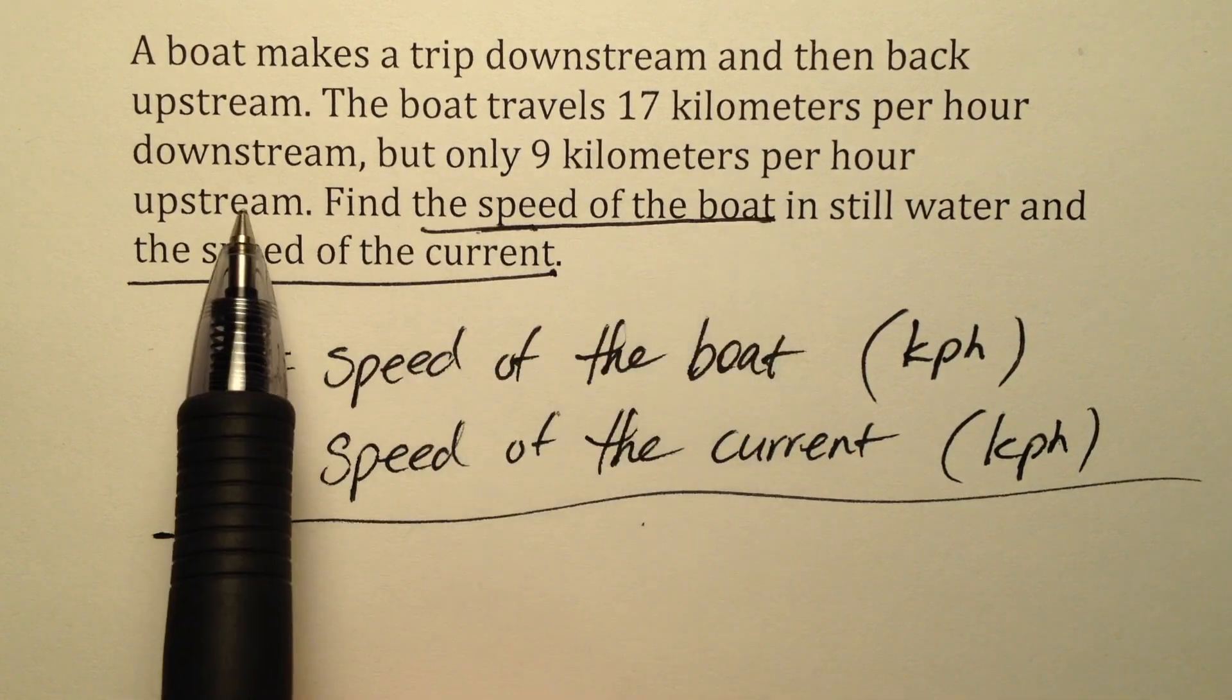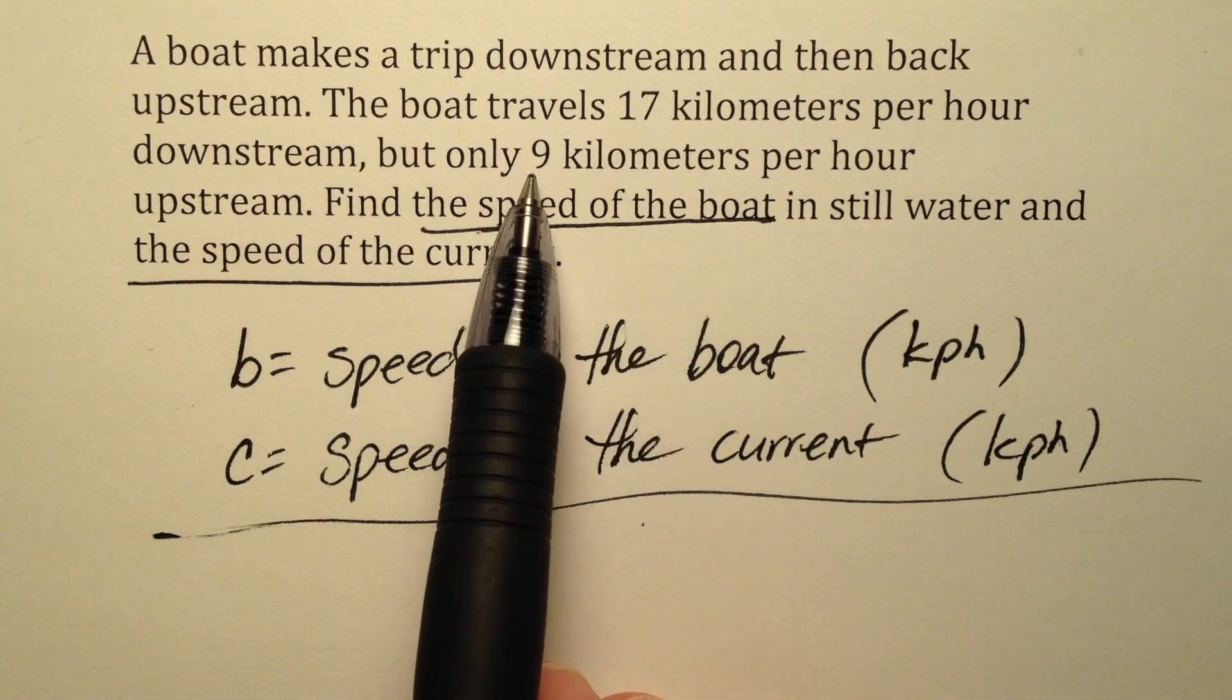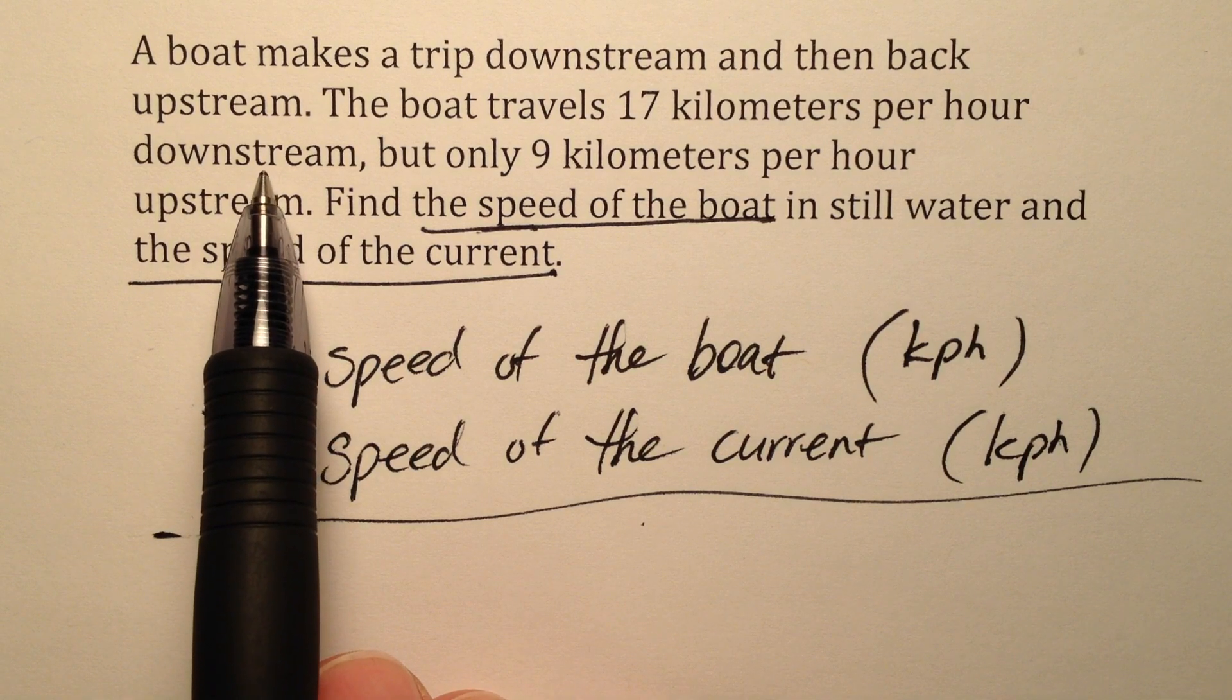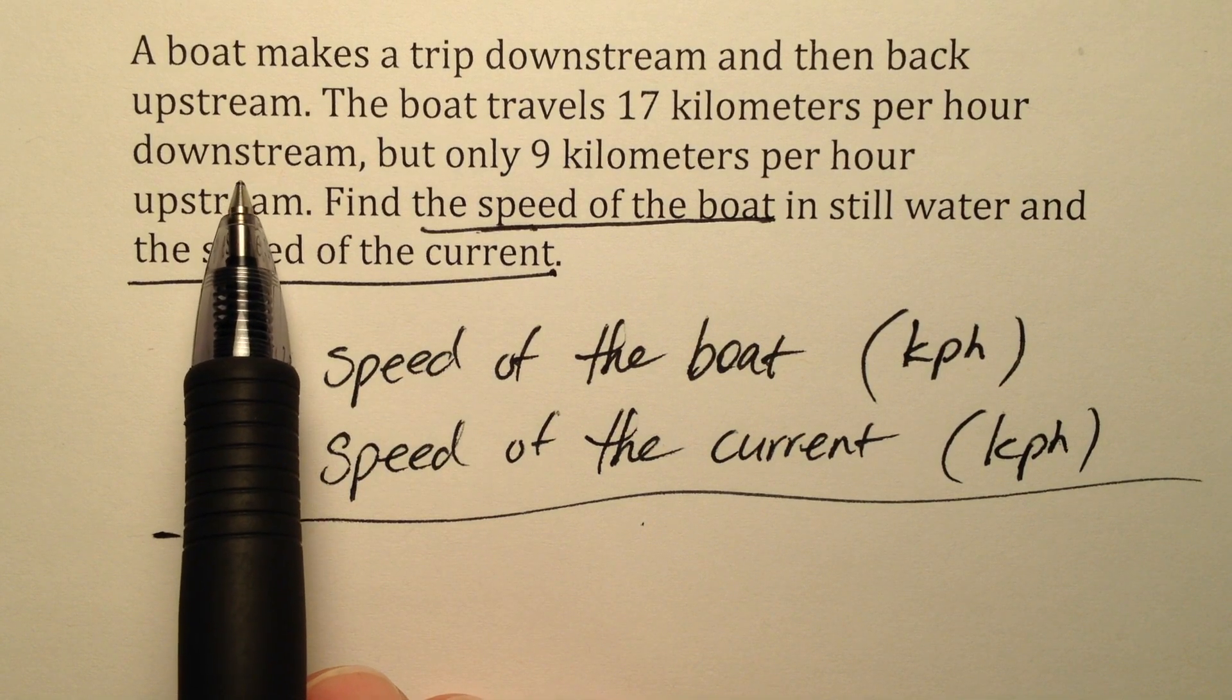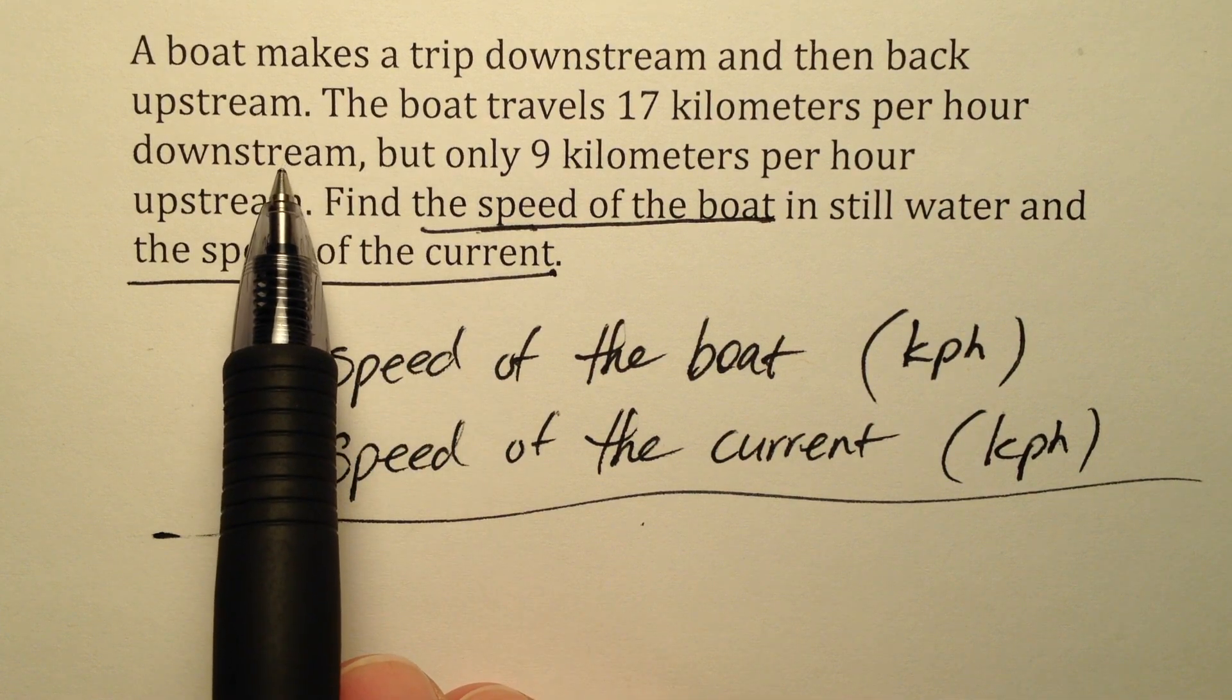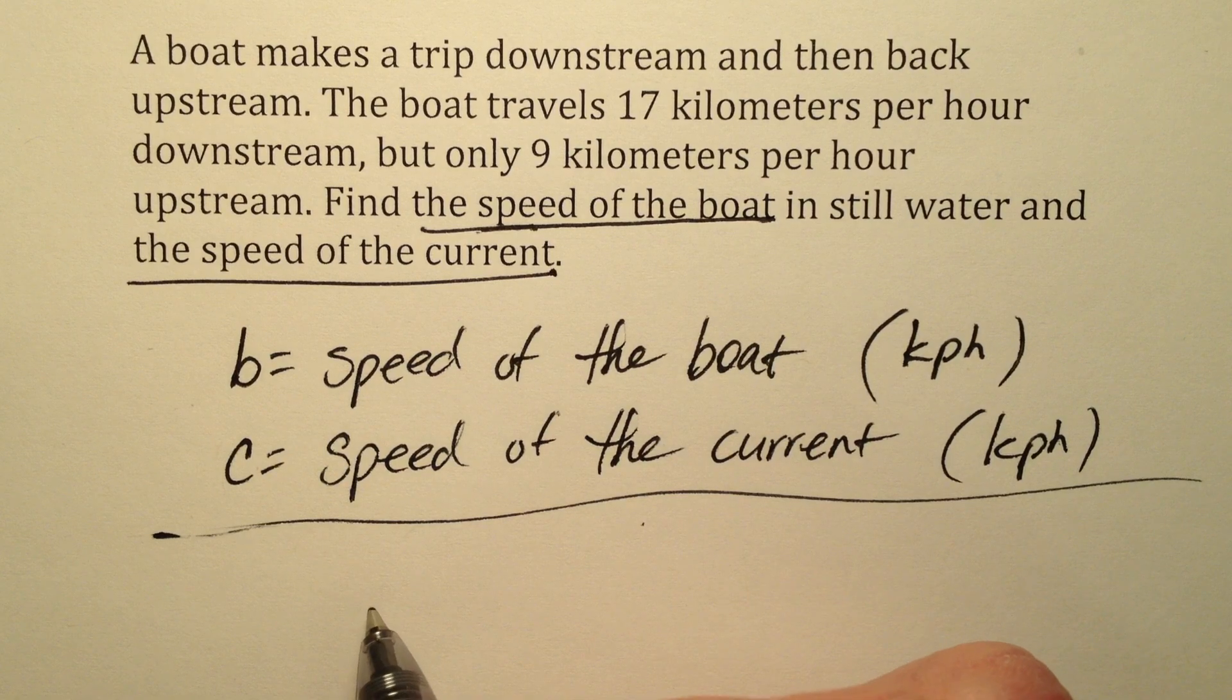So if a boat is traveling downstream versus upstream, why do we have the difference in speeds? Well, when a boat travels downstream, the current is working its way downstream. So what's happening is that the boat is going at some speed and the current is also pushing it along. So we can say that the boat and the current are working together to make the boat go even faster. So we can add those two together.